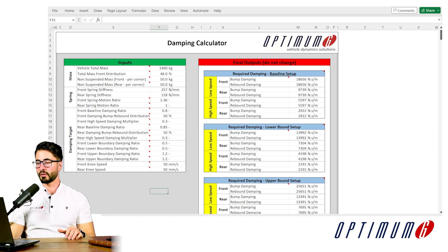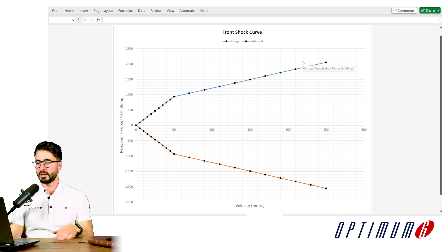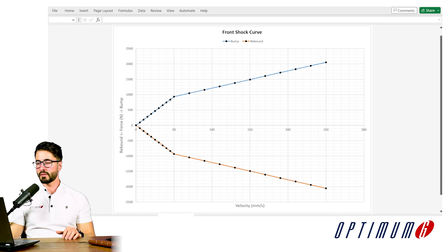This tool will calculate for me what is the final damper curve that I need. So it gives me the low speed and high speed behavior. So I can try to find a damper that matches this. Or even better, I can understand with all of the different adjustments.